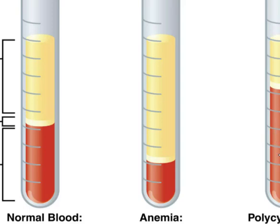Some athletes have found that if they do blood doping — drawing their blood and putting it back in right before competition — they can carry more oxygen and have more stamina. But the problem is they end up with too many red blood cells, which is dangerous. Blood doping is a dangerous situation, and I believe they're trying to make it illegal if it isn't already.